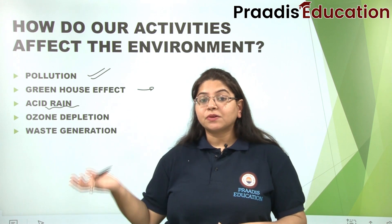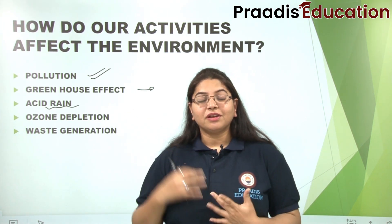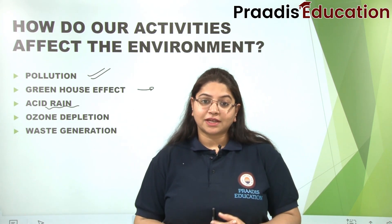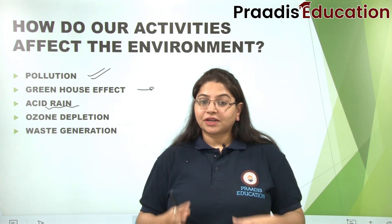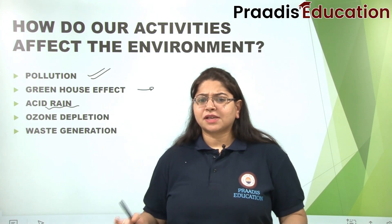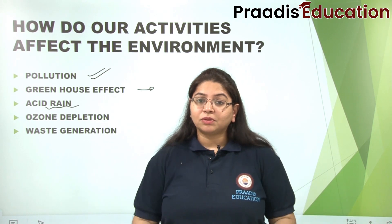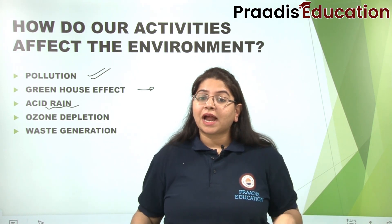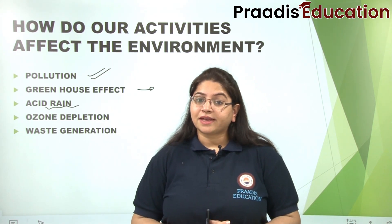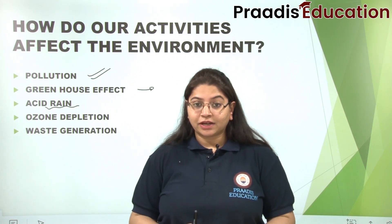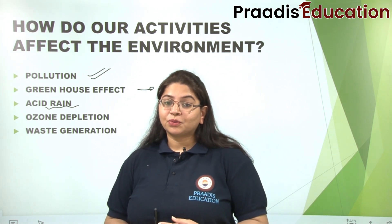Because when sulfur dioxide gets into the water, it becomes sulfuric acid, and when nitrogen oxides get into the water, it becomes nitrous acid. These nitric or nitrous acids, when they fall on the land, they reduce the quality of the land. That's why we call it acid rain, which makes the soil poor and affects the growth of plants.